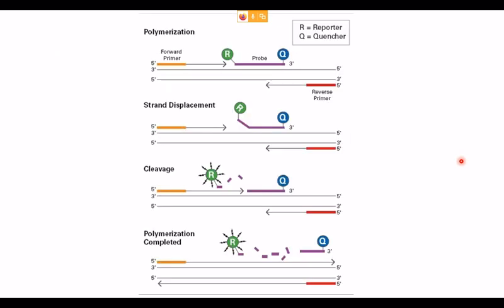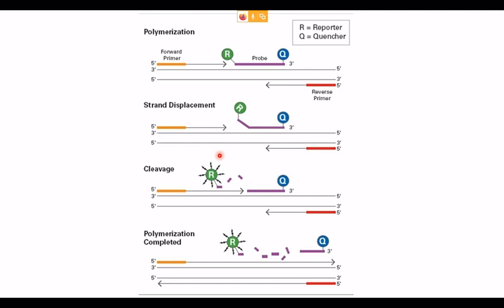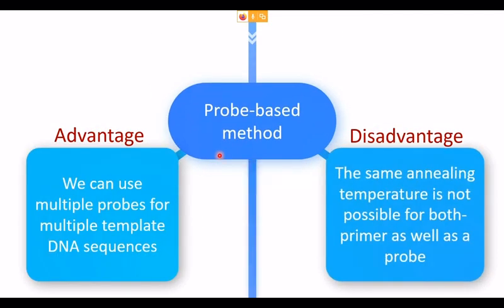This picture shows the linear probe method of real-time PCR. You can see the primer growing from 5' to 3', and in between is the probe containing the quencher and the reporter dye. As the DNA polymerase moves forward, it displaces and then cleaves the probe, releasing the reporter dye from the quencher. The reporter dye now emits fluorescence. More amplification means more reporter molecules released, and the increase in fluorescence can be recorded in real time to quantify the amplified DNA.